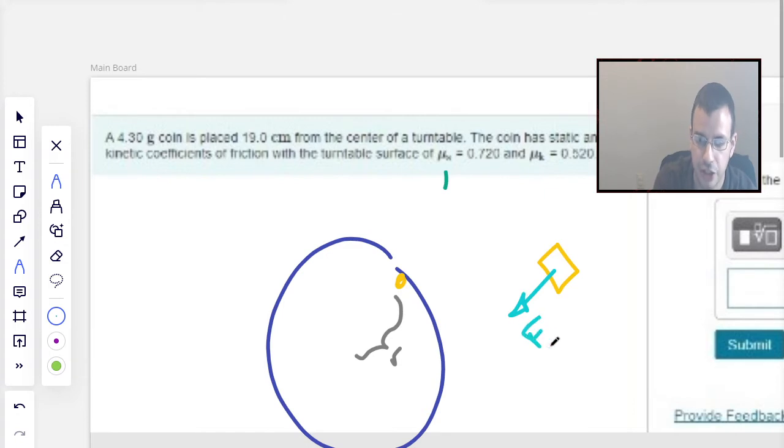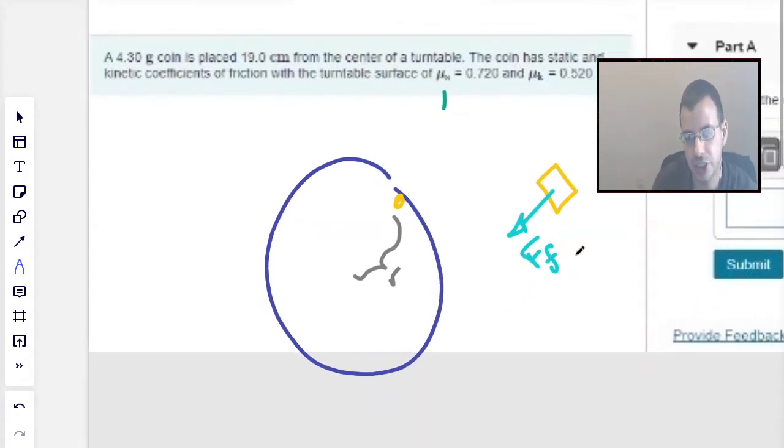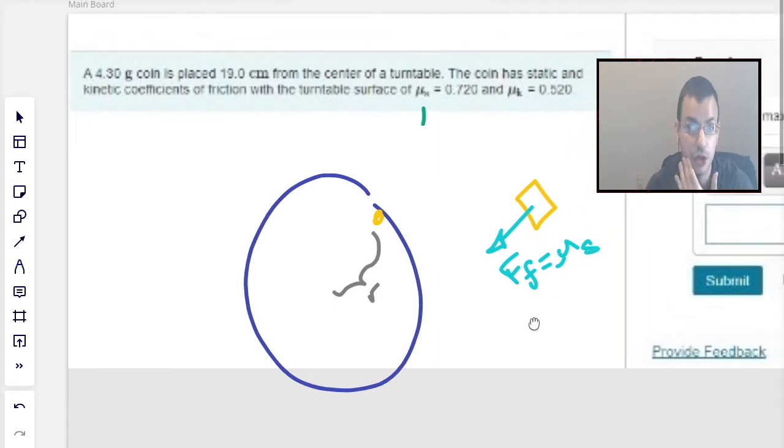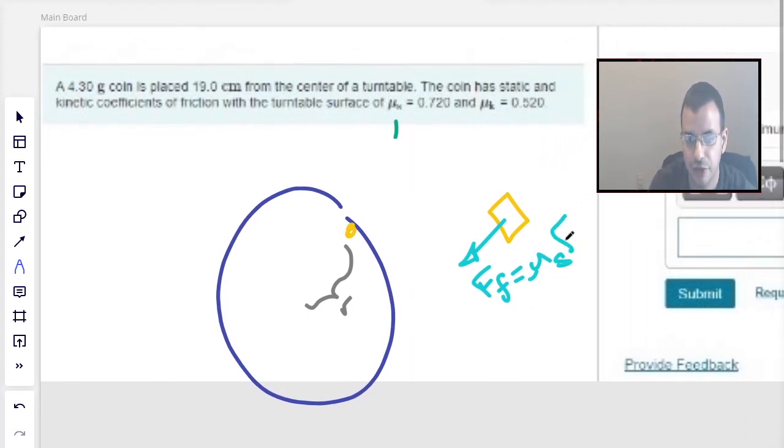So there's going to be a force of friction pulling it in. That force of friction is going to be µ static times force normal, because it's not moving. Well, it is moving. It's not moving relative to the turntable.